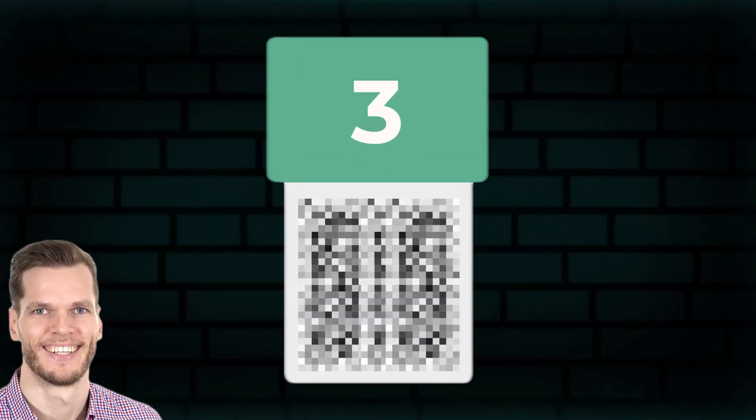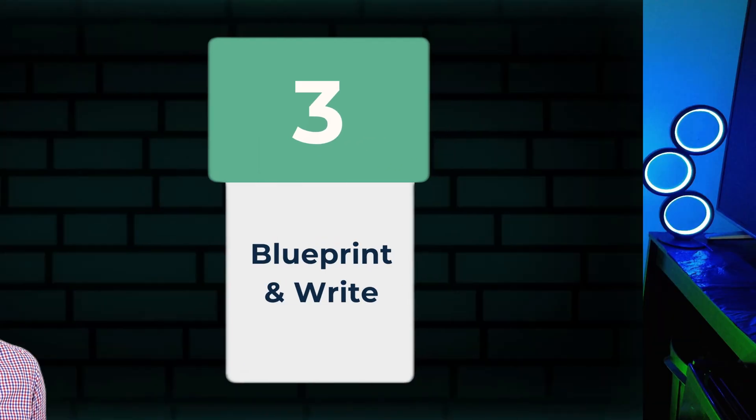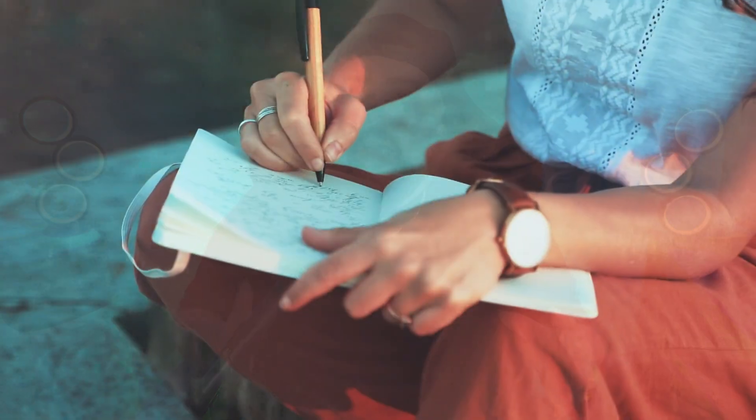And boom — there it is: Bob's book title, 'Back in Business: The Ultimate Guide to a Pain-Free Life.' That sounds like private jet money to me! But that's not enough on its own, so that leads us to step three: blueprint and write. Now we have the reader and the perfect idea, so it's time to write the book. Writing an entire book sounds like a huge task, so we're going to break it into chapters and use a proven blueprint to write the entire thing.